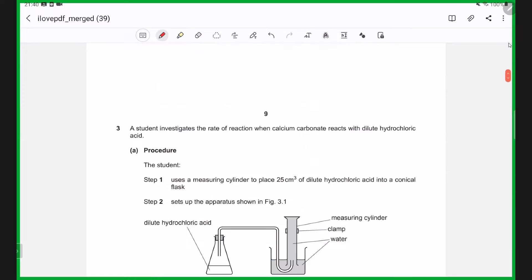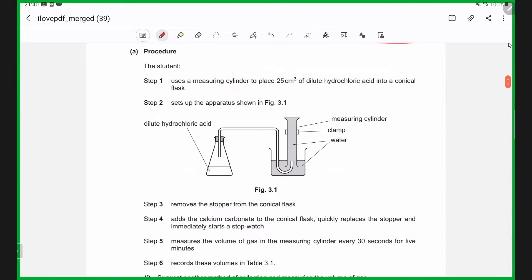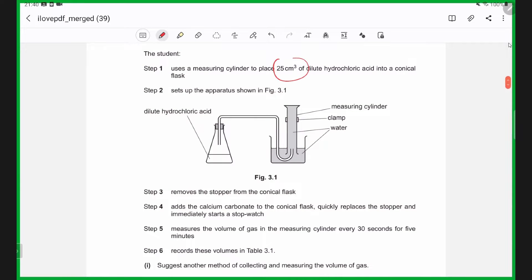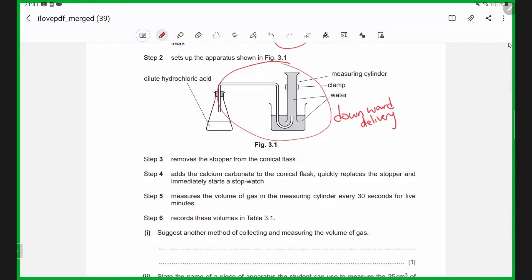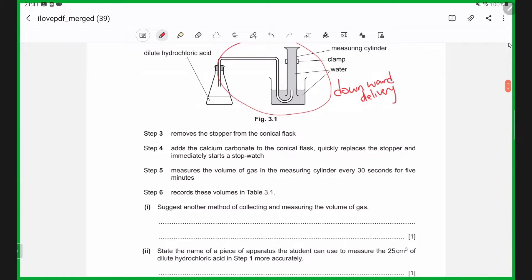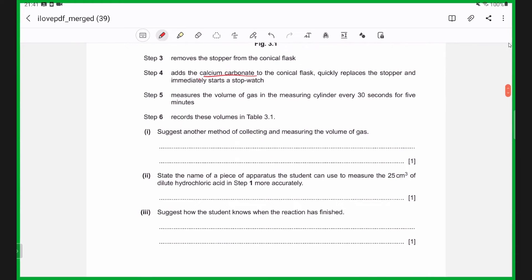So first, let's start with this question on the reaction between calcium carbonate and dilute hydrochloric acid. The student uses a measuring cylinder to place 25 cm3 of acid into a conical flask and sets it up. Remember that this setup is a downward delivery setup to collect gases. Next, the student removes the stopper from the conical flask, adds calcium carbonate, replaces the stopper, and starts the stopwatch. She measures the volume of gas every 30 seconds for five minutes and records these volumes in table 3.1.